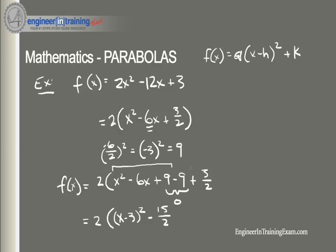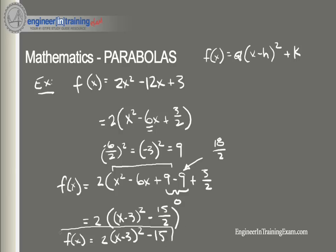For the constant: convert 9 into a fraction, 18/2, then subtract 18/2 and add 3/2, giving −15/2. Now all we need to do is multiply the 2 back through, and we get f(x) = 2(x − 3)² − 15.